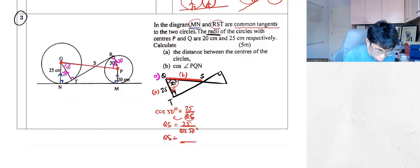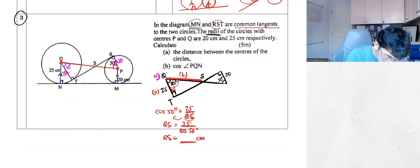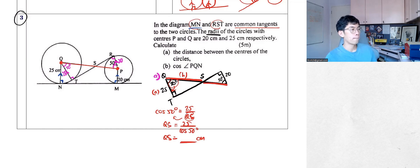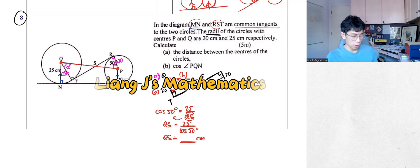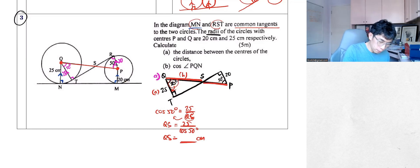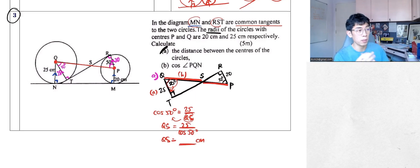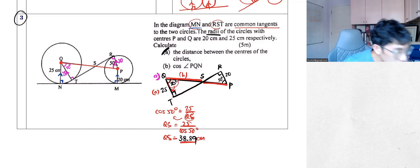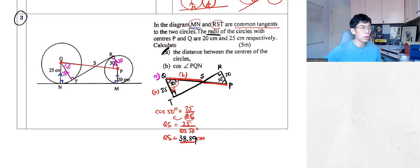You'll be able to get your answer to two decimal places. For the SP part: cos 50 equals to adjacent 20 over hypotenuse SP, so SP equals 20 over cos 50 — SP equals 31.11 cm. So the final answer for QP is 70 cm. The total of the two decimal point answers added together is actually a whole number.